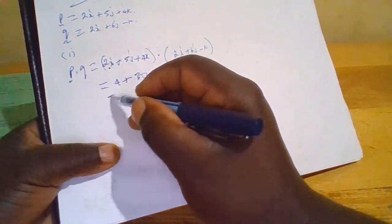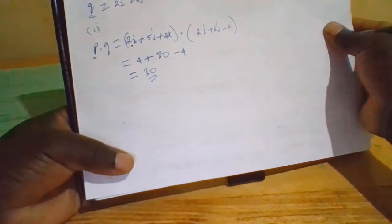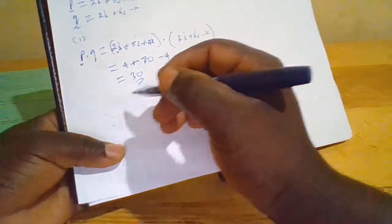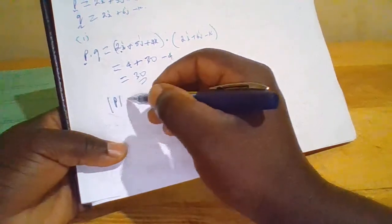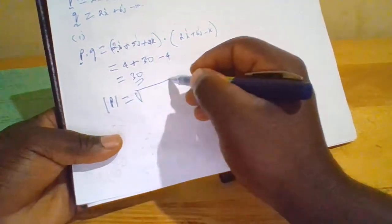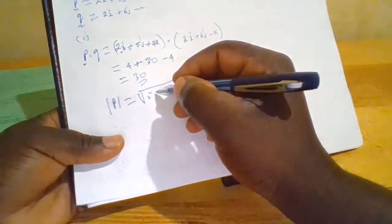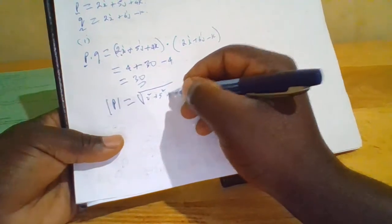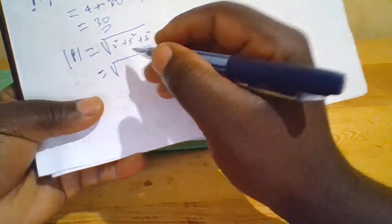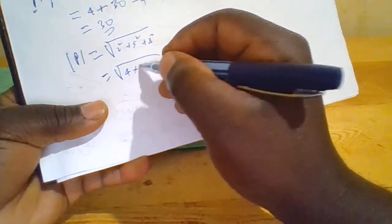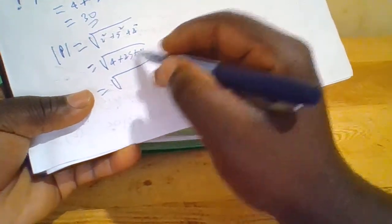So this equals 30. Now after getting this, the modulus of vector p is given by the square root of 2 squared plus 5 squared plus 4 squared, which equals the square root of 4 plus 25 plus 16, equals the square root of 45.